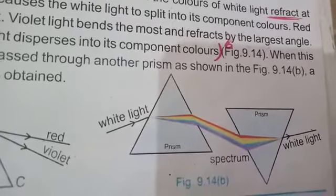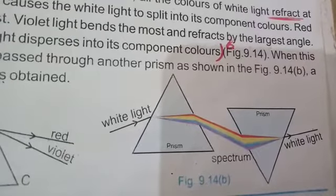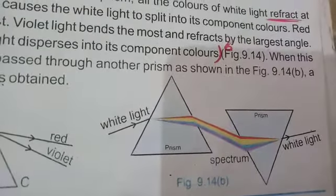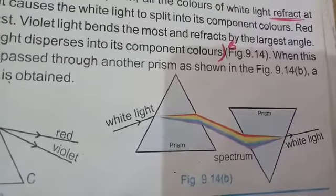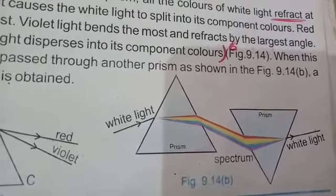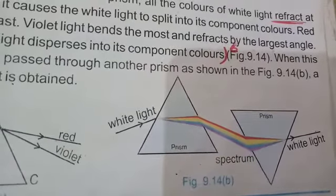As you can see, there are two prisms. When white light passes from the first one, it splits up into different colors, and this is called dispersion of light. When this dispersed light is again passed through another prism, the white light will be obtained again.